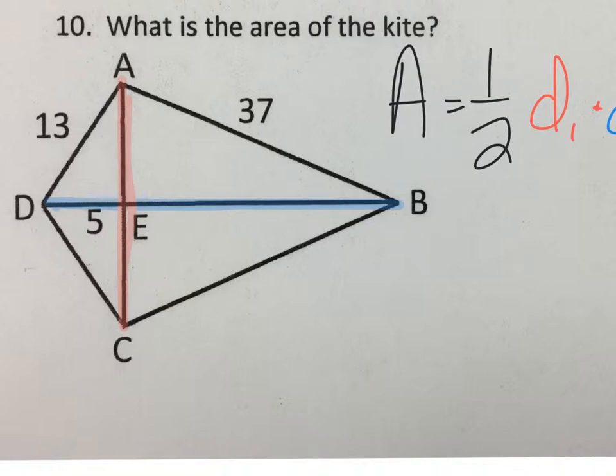But we know enough to figure it out because the diagonals of a kite are perpendicular, so we can use our buddy Pythagoras to figure both of these out.